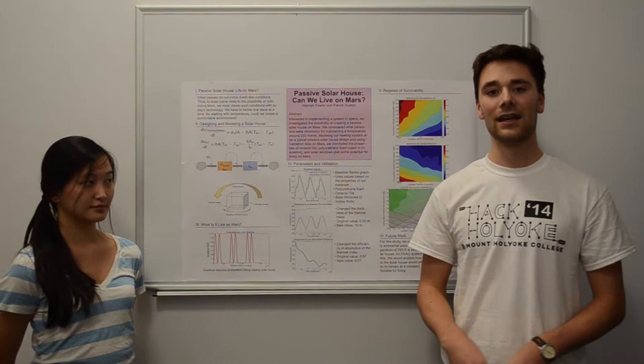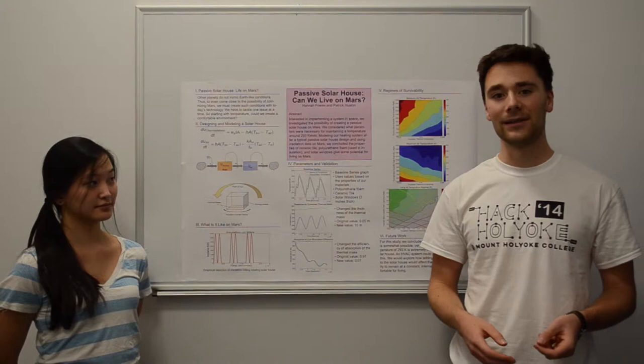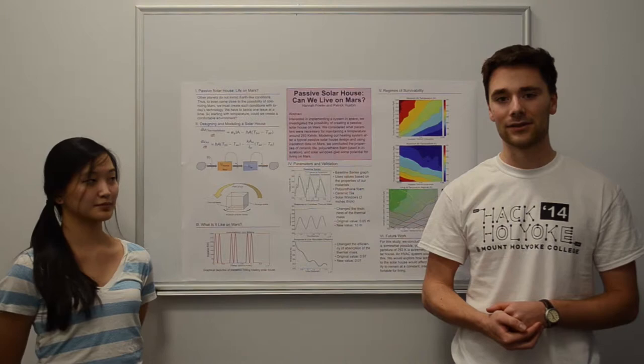So what we did is we modeled a passive solar house, and how this works is you get the Sun's energy coming into the house during the day, a thermal mass heats up a bunch, and then during the night it releases this temperature into the house. And what this aims to do is create a more stable environment in the house.